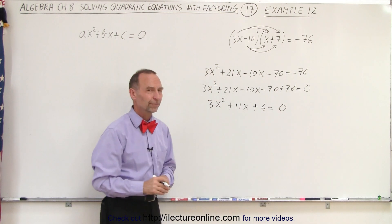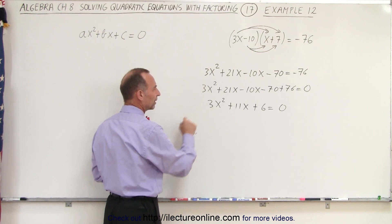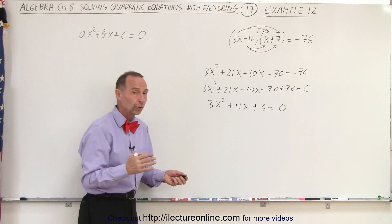And now we're ready to factor this. Because we don't have a 1 in the front here, we don't have a 1 for the x squared term, we may want to use the FOIL method.